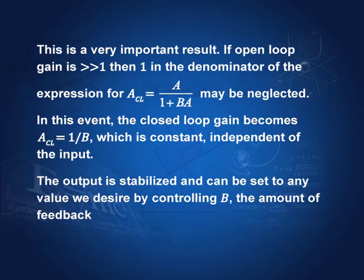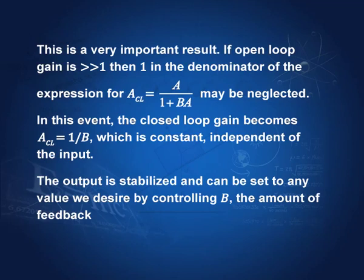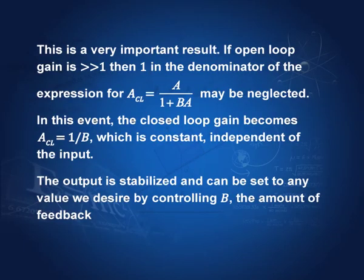If the open loop gain A is much greater than 1, then the 1 in the denominator of the expression for A_CL may be neglected. We get A by BA — A cancels — and we have only 1 by B. So the closed loop gain is 1 by B, which is the reciprocal of the fraction of the output fed back. This is independent of everything — the output is stabilized and can be set to any value we desire. By changing B, we can set the output to any desired value and it does not change. Therefore it is stabilized, and we just have to control the fraction of the output fed back to the input.